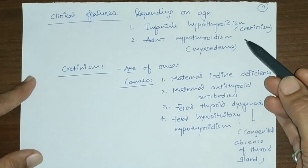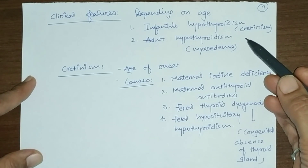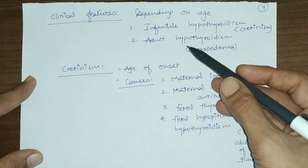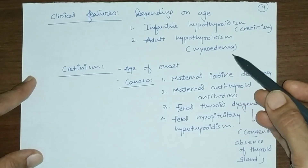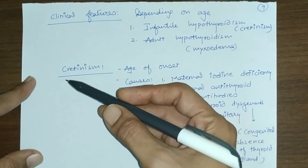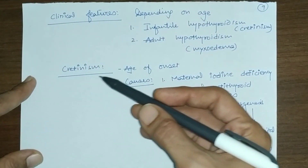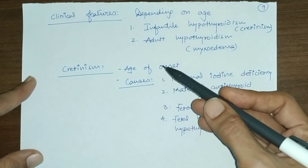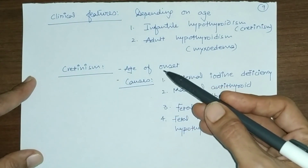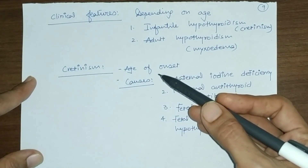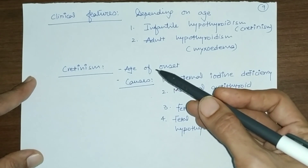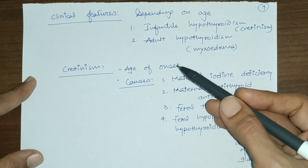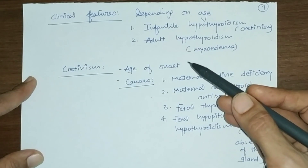Clinical features of hypothyroidism depend on the age of onset. Infantile hypothyroidism is also known as cretinism, while adult hypothyroidism is known as myxedema. Cretinism occurs when thyroid deficiency develops during the first year of life.